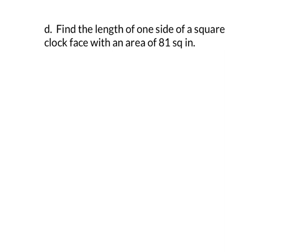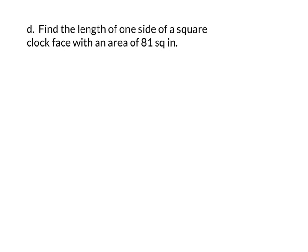We want to find the length of one side of a square clock face with an area of 81 square inches. Using A equals s squared, we plug in 81 for A, then find what times itself equals 81. We get 9 equals s, and since this is a length, s equals 9 inches.